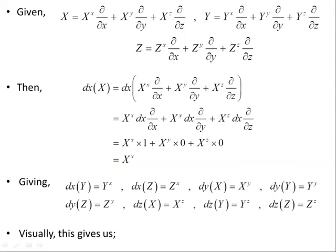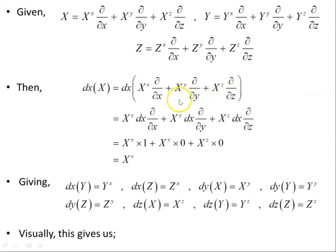Similarly for the others: dx acting on y, dz acting on z, dx acting on z, dy acting on x each gives us the respective components of the vectors. If we had dy acting on x, then dy would extract only the y component of vector x. Applying this process across all combinations gives us all the needed components.